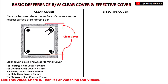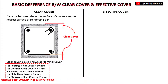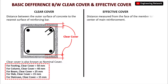This is all about clear cover and the different values for different structural members. Now let's talk about effective cover. The effective cover is the distance measured from the face of the member to the center of the main reinforcement — from the face of the member to the center of the main reinforcement.